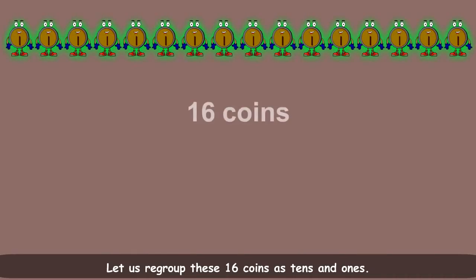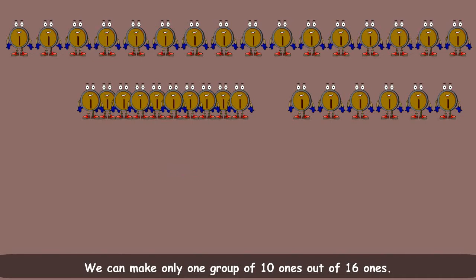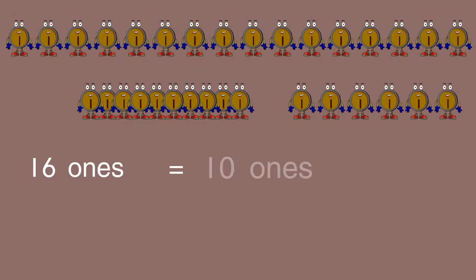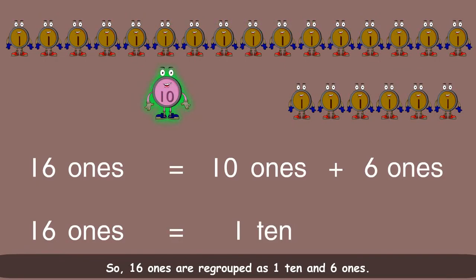Let us regroup these sixteen coins as tens and ones. First, make groups of ten ones. We can make only one group of ten ones out of sixteen ones. Sixteen ones equals ten ones plus six ones. So, sixteen ones are regrouped as one ten and six ones.